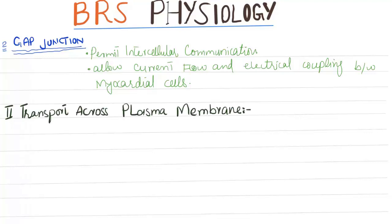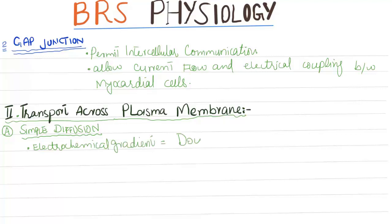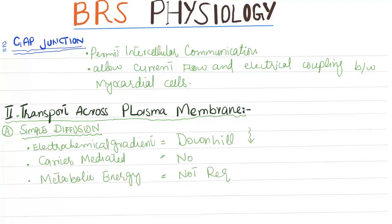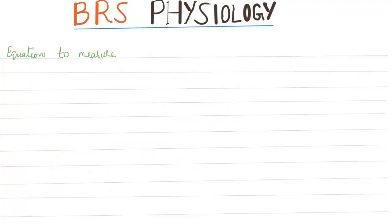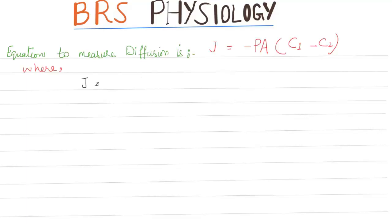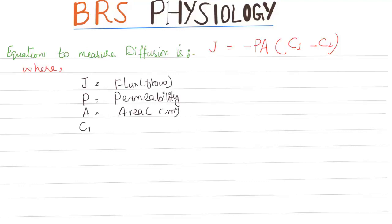Transport across the plasma membrane. Simple diffusion: the electrochemical gradient is downhill and it is not carrier-mediated. Metabolic energy is not required, so it is passive, and there is no sodium gradient. The equation for simple diffusion is J equals P times A times (C1 minus C2), where J is flux or flow, P is permeability, and A is area.